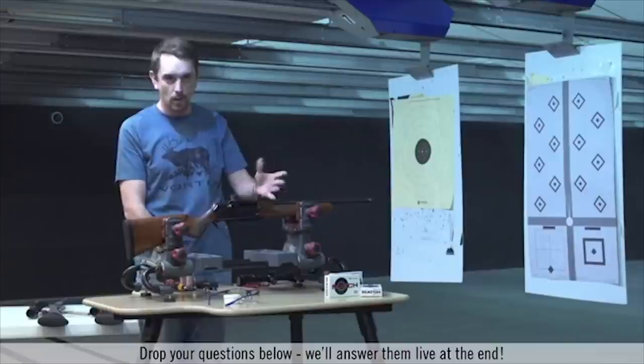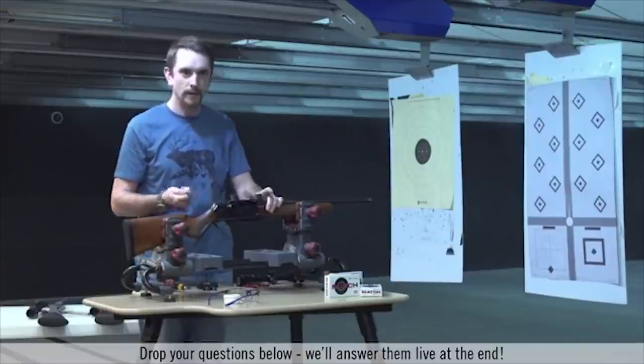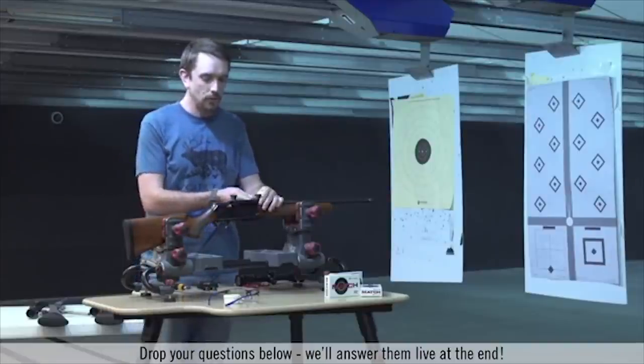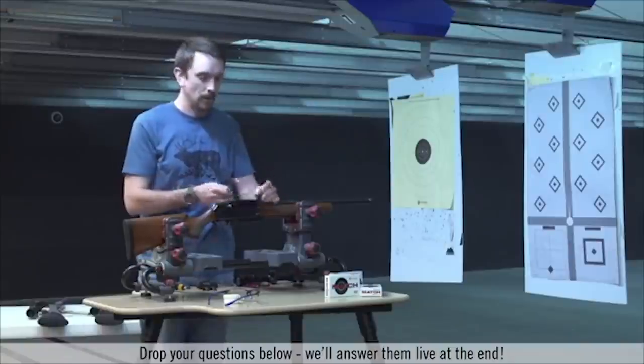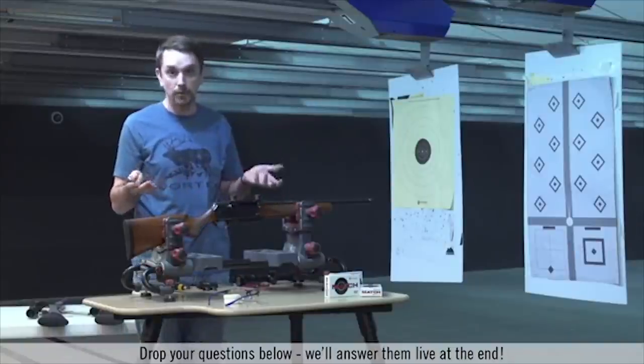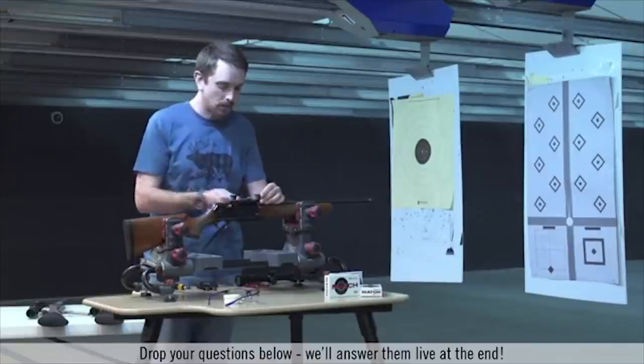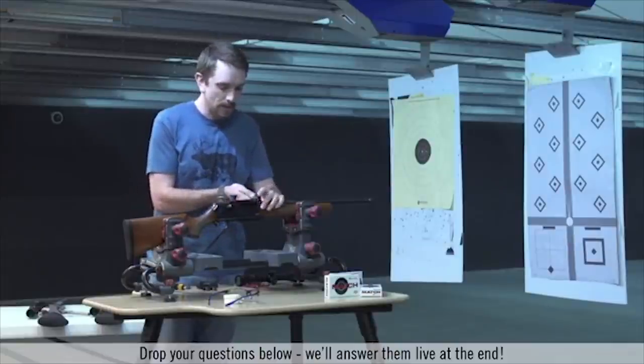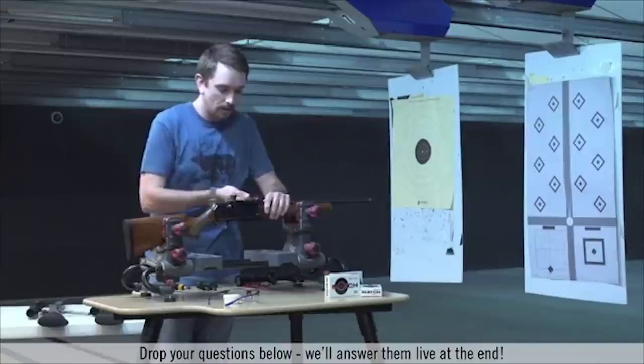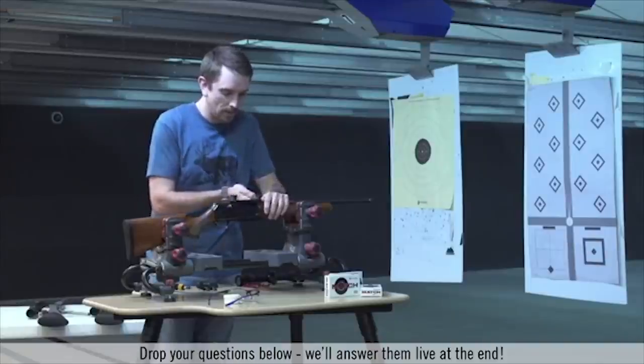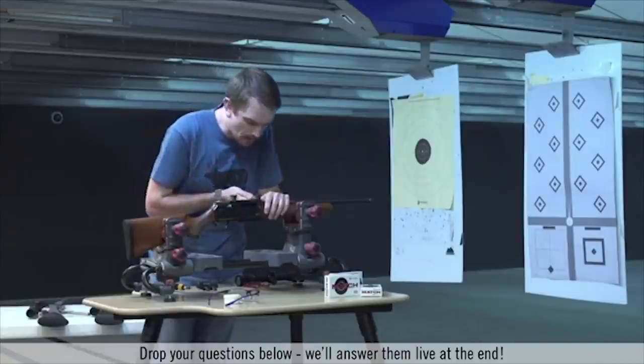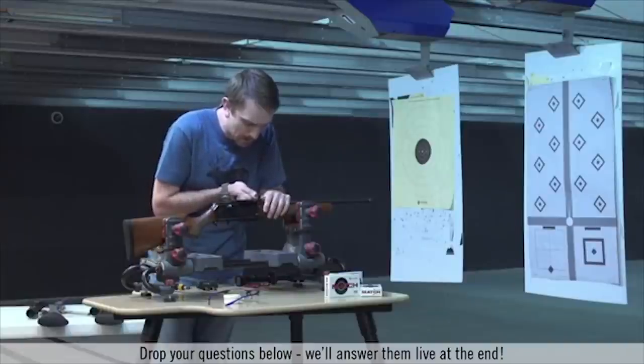A consideration to make with any windage adjustable system like these or like the older Redfields is that the two rings are in alignment with each other. If you don't do that, the potential to crush the rifle scope is very real. A 9/16 inch wrench will fit on these and this front ring will pivot left or right. I believe that would be the correct terminology.